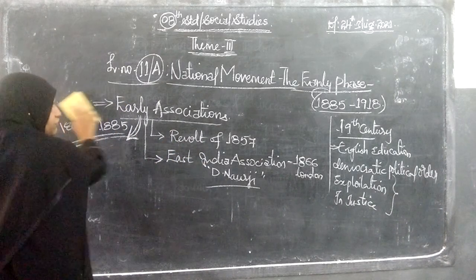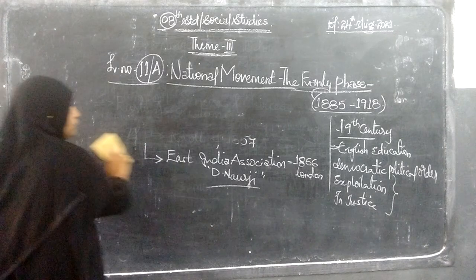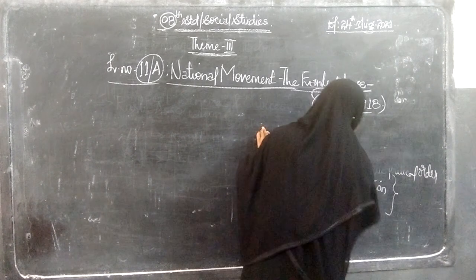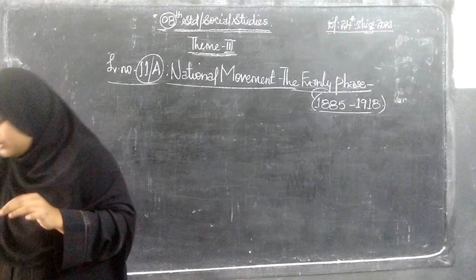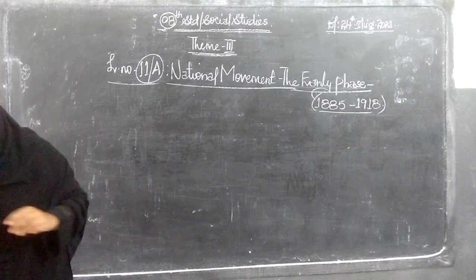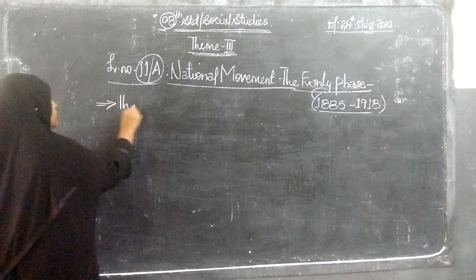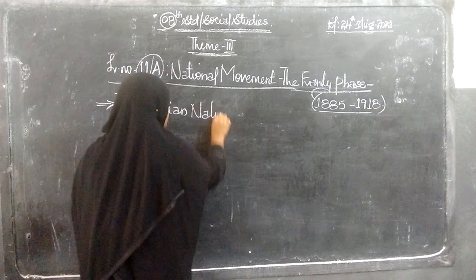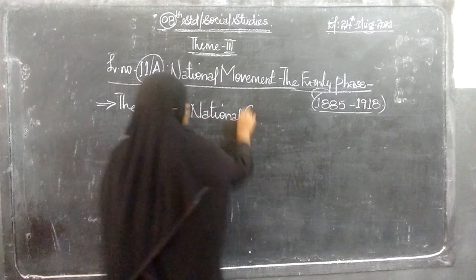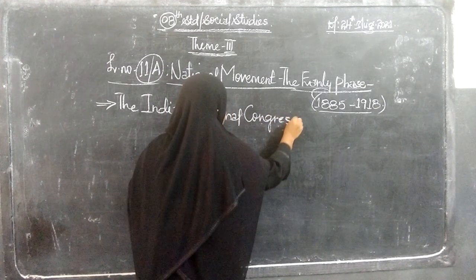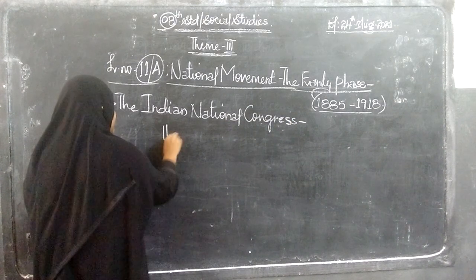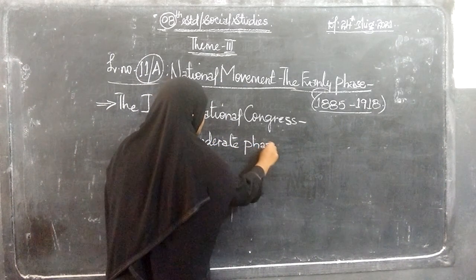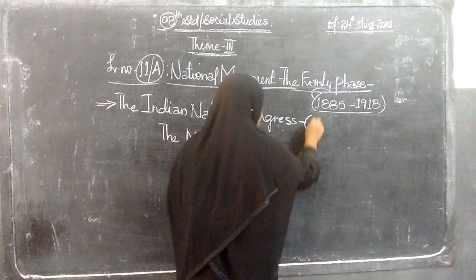Now we will begin with the very first phase: 1885 to 1905. After 1885, what is the phase that happens? This is the formation of the Indian National Congress, also known as the INC.